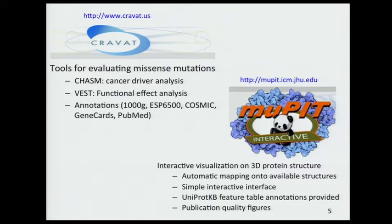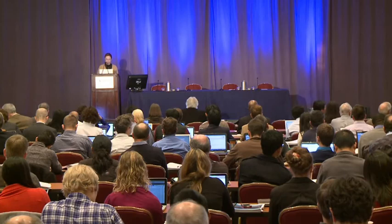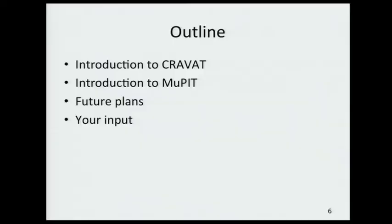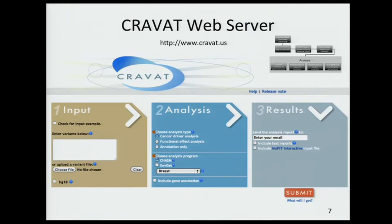The first tool I'm going to talk about is CRAVAT, a tool for prioritizing missense mutations. Then I'm going to talk about Muppet, a visualization tool which allows you to map mutations from genomic coordinates onto protein structures and learn about mutations through interactive visualization. I'd also like to get your input as a community because these tools are for you. The goal is to make them easily used by someone who doesn't have an extensive computational background or a bioinformatics support team — to make these very user-friendly.